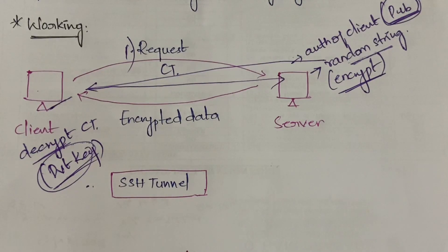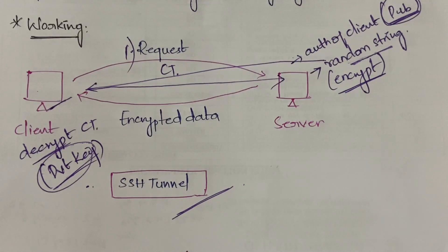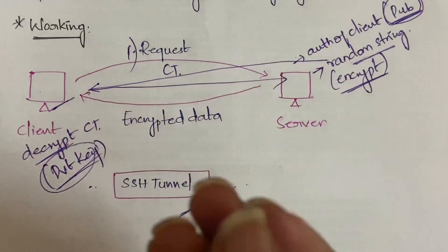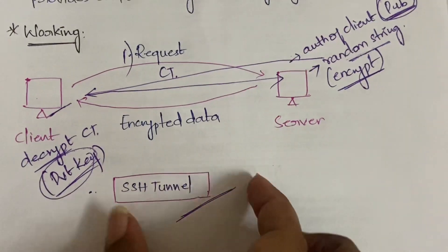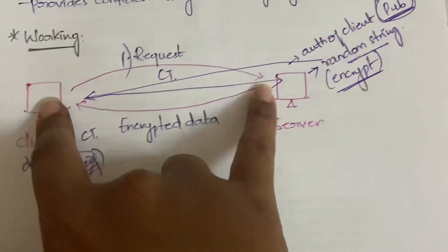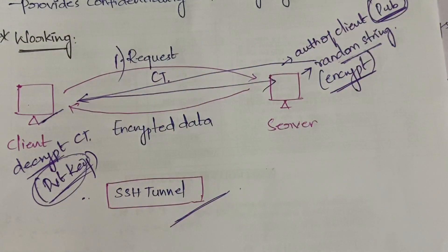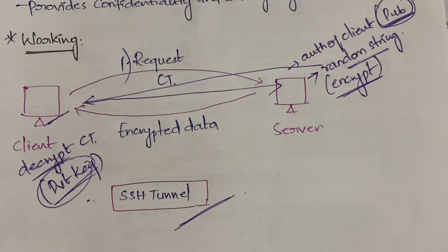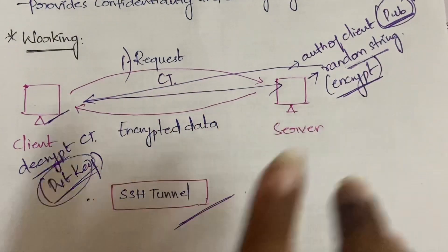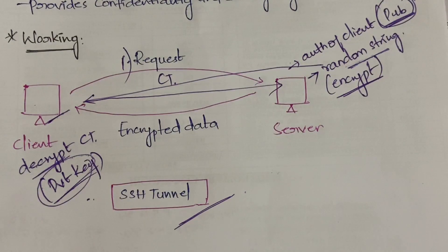Once the authentication of the client is confirmed on the server's end, an SSH tunnel is created. This tunnel is a secure channel for communication between the client and server — nobody can enter the tunnel and steal the data. In summary: the client sends a request, the server checks the public key, generates and encrypts a random string, the client decrypts it with the private key and sends it back, and upon confirmation, the tunnel is established for all further communication.